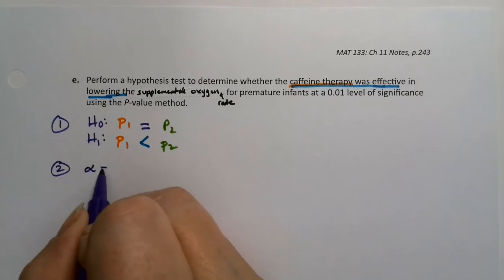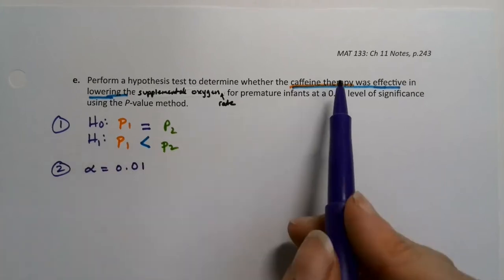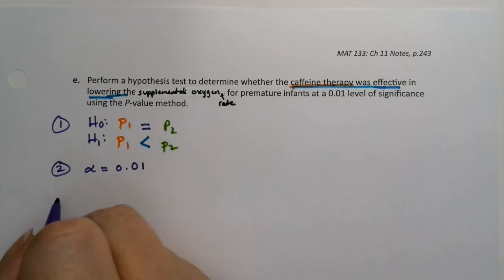Step two, alpha is easy. Everybody loves step two. It's always given to you in the problem somewhere. So there it is, 0.01.